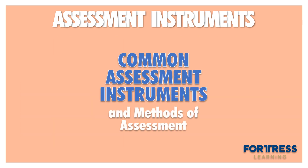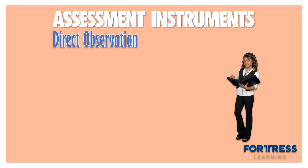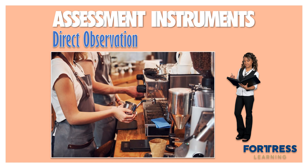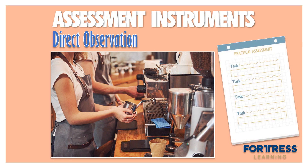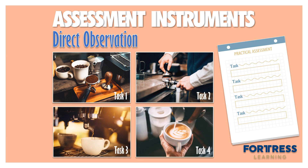Common assessment instruments and methods of assessment used in the Australian Vocational Education and Training System include direct observation. These instruments are used by assessors to observe and assess a student's performance of specific tasks or skills in a workplace or simulated environment, for example, a cafe. The assessor will have a checklist of steps or tasks that a learner would need to demonstrate to show that they can perform a task to a satisfactory standard, like safely operating a coffee machine.